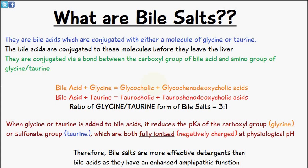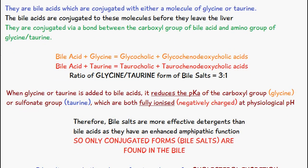When you add a bile acid to glycine you can either get glycocholic acid or glycochenodeoxycholic acid. If taurine is being added, you can either get taurocholic or taurochenodeoxycholic acids. The ratio of the glycine to taurine forms of these bile salts is 3 to 1, so there are more glycine-based bile salts than taurine-based bile salts.